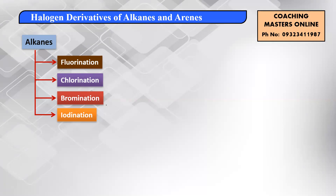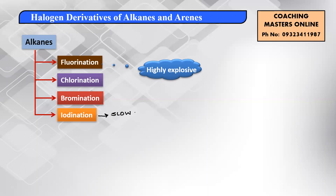We don't carry out fluorination because the reaction is highly explosive. We also don't carry out iodination because iodination is a very slow and highly reversible process. So we neither do iodination nor fluorination — we prefer chlorination or bromination.